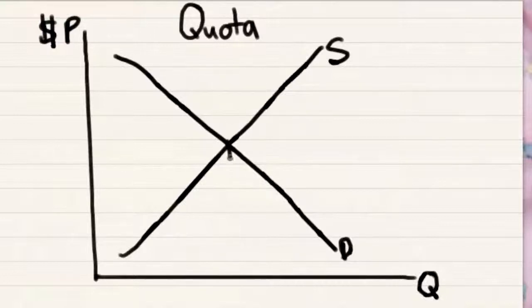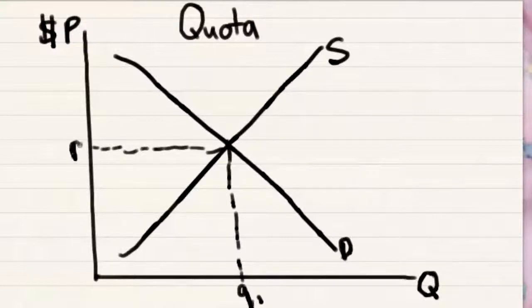So, let's draw in the quantity first. This is Q1. Sorry, that's a little squiggly, but you get the idea. Oh, it's P1. Okay, S1, demand 1.